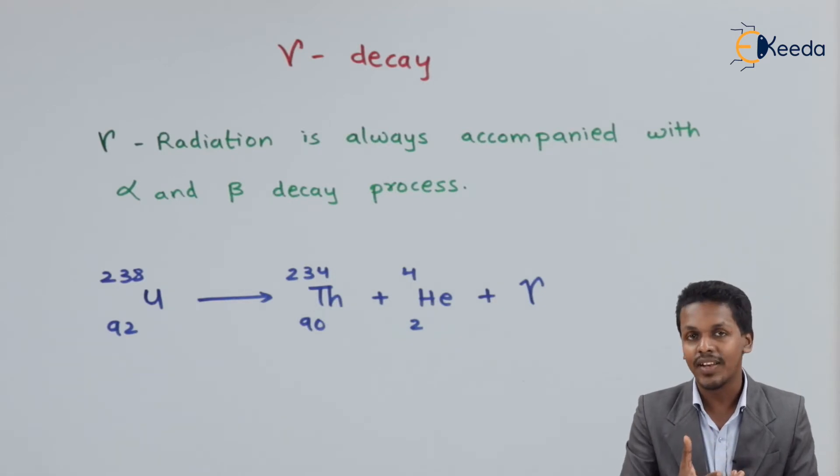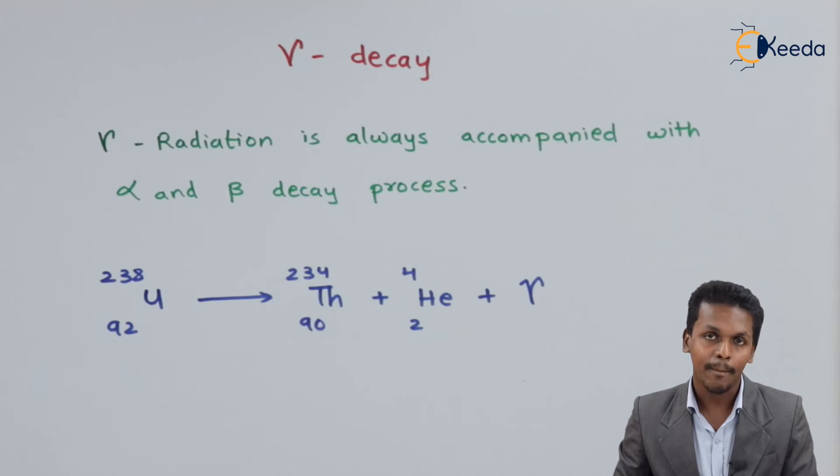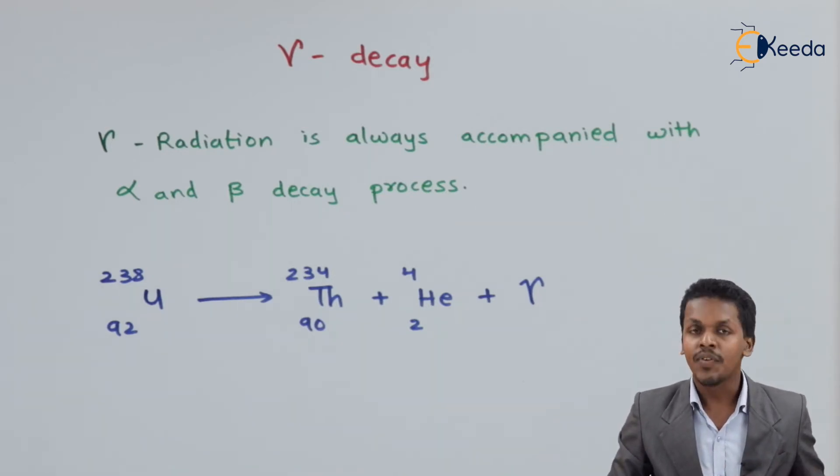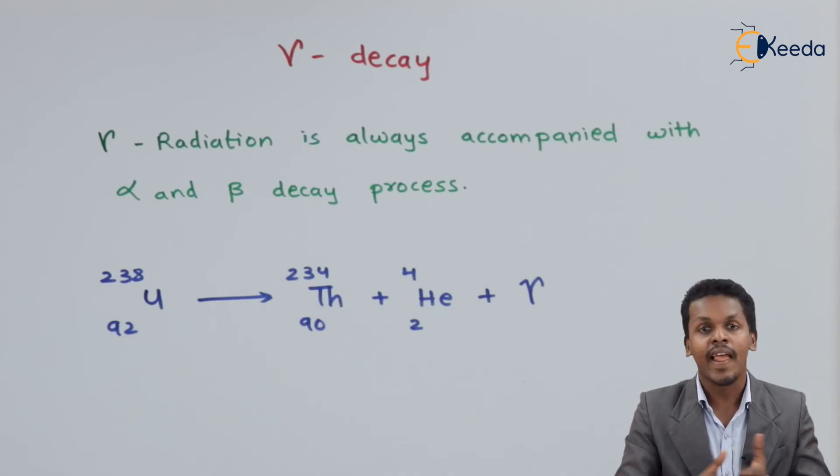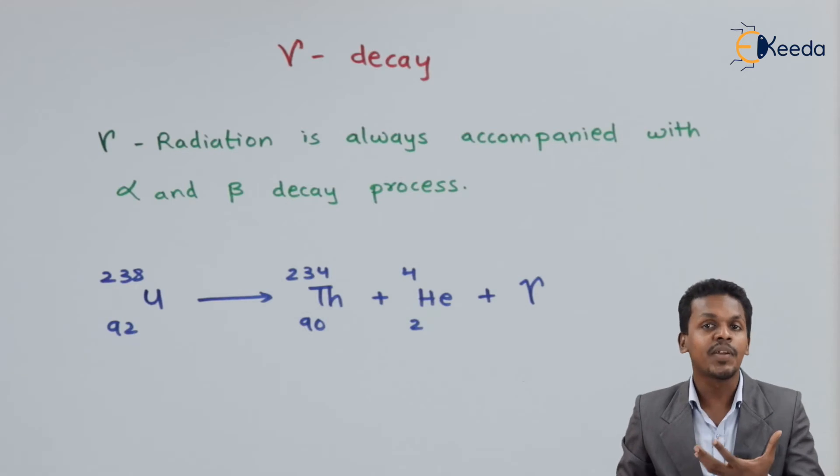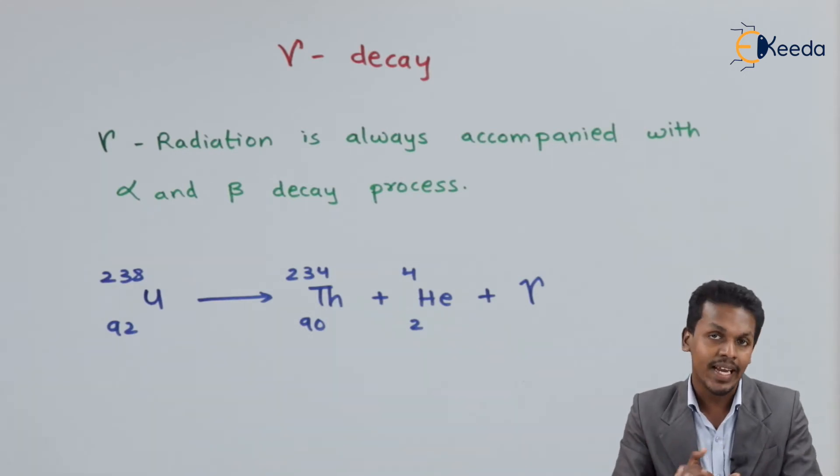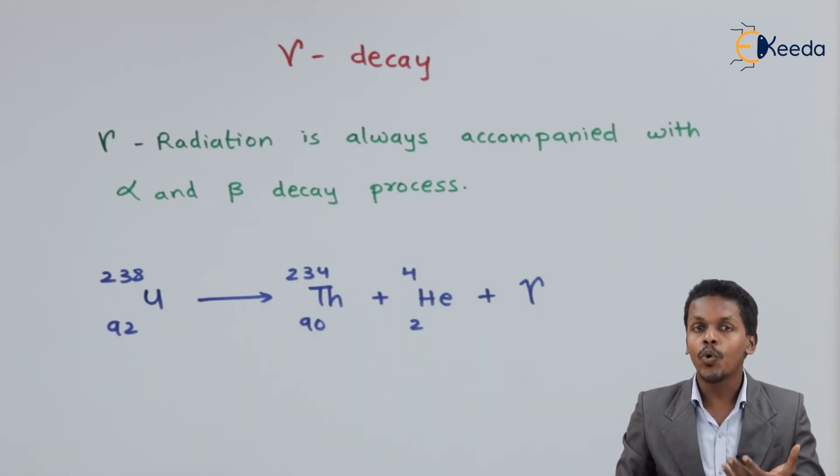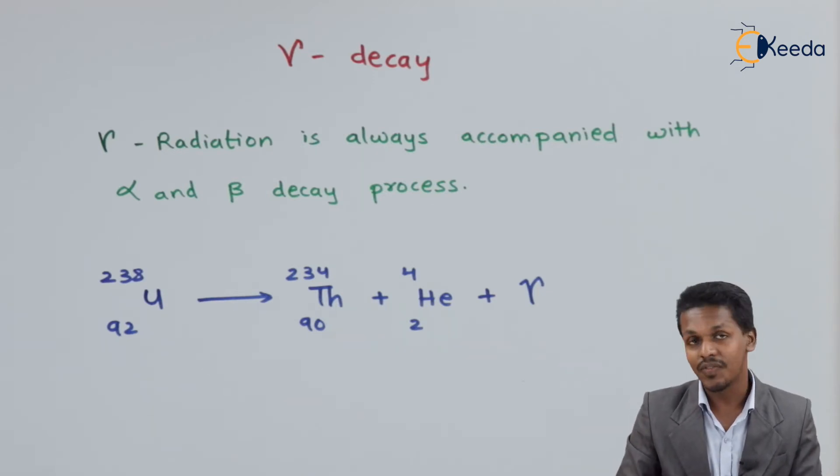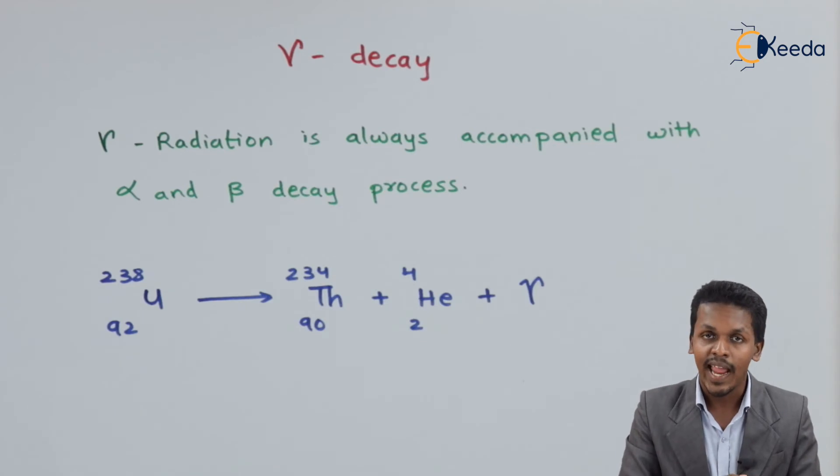There are two kinds of energy levels we can get. For 23% of the decay, we receive 4.147 MeV of energy. For the other 77%, we get 4.195 MeV.